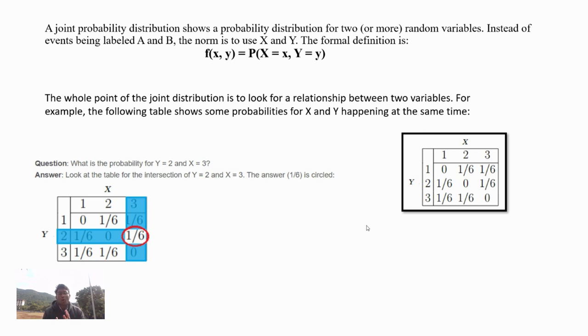The whole point of the joint distribution is to look for a relationship between two variables. For example, the following table shows the probabilities of X and Y happening at the same time.